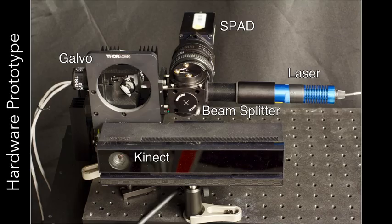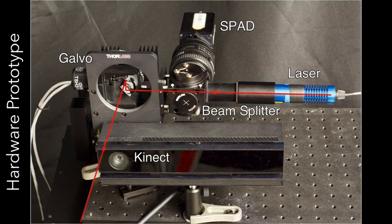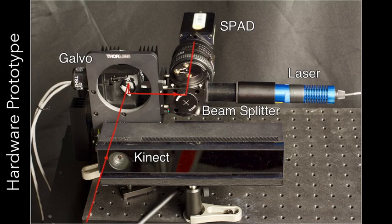We also built a hardware prototype and evaluated our method on real-world data. The image for the monocular depth estimator is captured using the RGB camera of a Kinect V2 and a SPAD, which shares an optical path with a pulsed laser. The laser emits a pulse of light, which is guided by the galvo towards the scene. Returning light is captured by the galvo and is directed via a beam splitter to the SPAD.